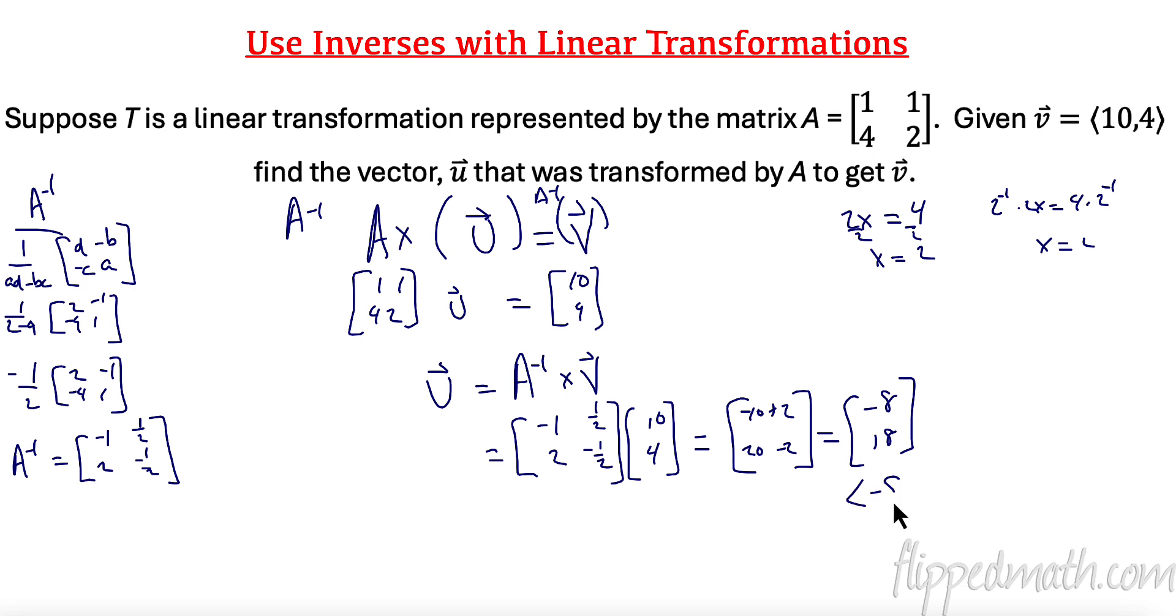In other words, if we started with the vector negative 8, 18, multiplied it by our transformation, matrix A, we would have gotten matrix V. And there you have it.